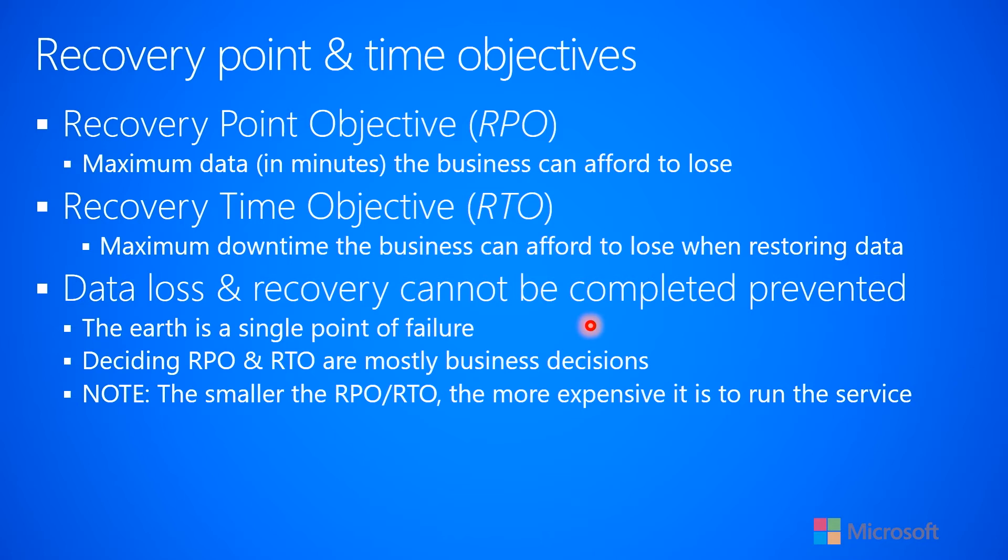Deciding the proper values for RPO and RTO are really mostly business decisions, not technical decisions. You're going to write the code to do a backup, but whether you execute that code once an hour or once a week is really a business decision, because you've already written the code to do the backup.